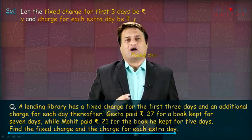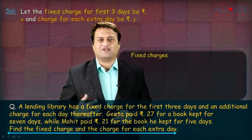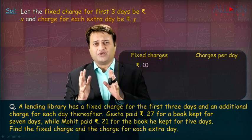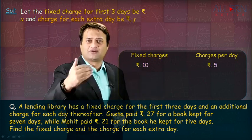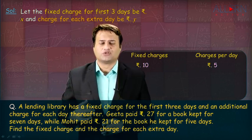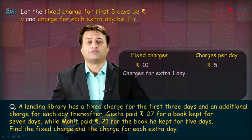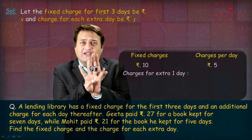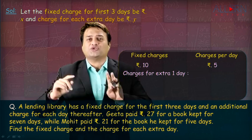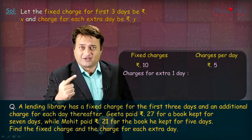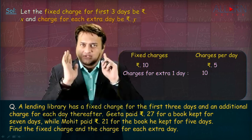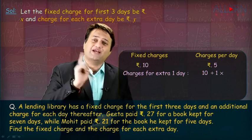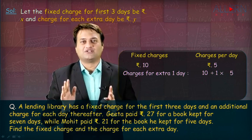Right? Now, we need to understand the relation between the fixed charge and the charges per day. It is like, say if the fixed charge is Rs. 10 and for each extra day the charge is Rs. 5 — how do we calculate the total charge for the book? Say if the book is kept for 4 days: 3 days is fixed, so 1 extra day. The fixed charge Rs. 10 will be charged, plus for 1 day the extra charge will be 1 into 5. So the total charge would be Rs. 15.